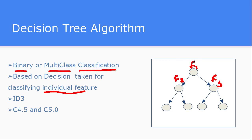Whatever decision you have taken on feature f1, you again further go for classification based on another feature f2. Again you decide the values of f2 features, and based on that classification you decide the possible classes. If you decide on feature f3 with a value greater than some threshold, you land in a branch, and once you reach the very end of the route you eventually get the class the individual record belongs to.